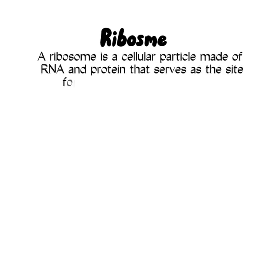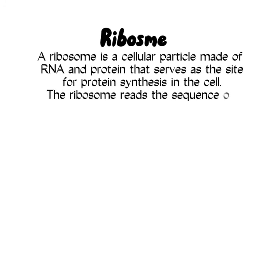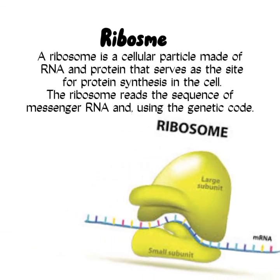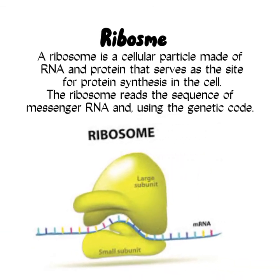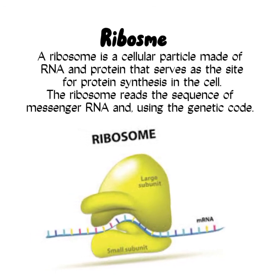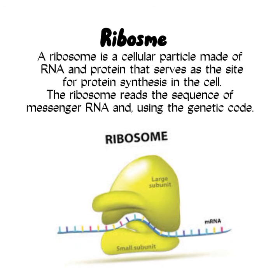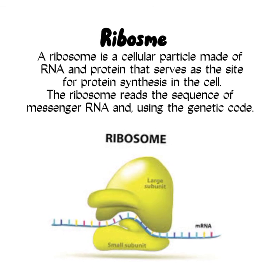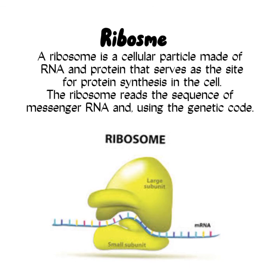Ribosome. Ribosome is a cellular particle made of RNA and protein that serves as the site for protein synthesis in the cell. Ribosomes read the sequence of messenger RNA and use the genetic code to produce proteins. The sequence on messenger RNA is read, and the genetic code — adenine, guanine, thymine, cytosine — is used to determine which protein the body needs, and that protein is then made accordingly.